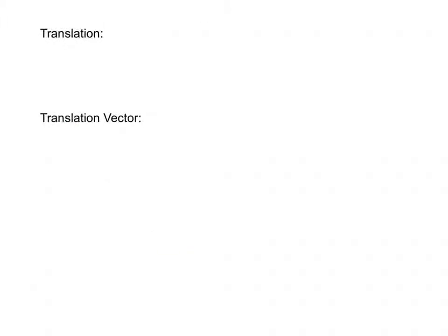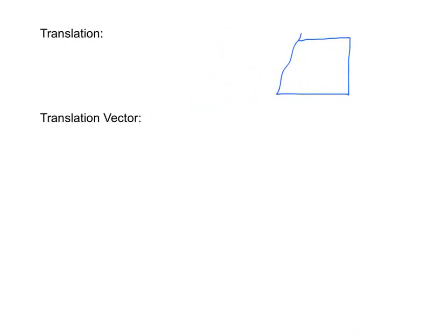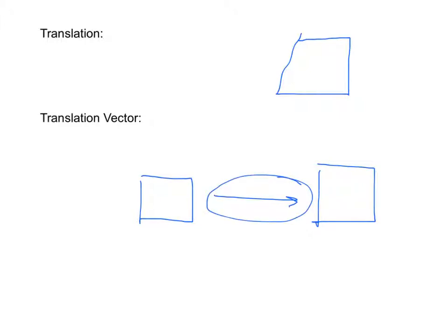A translation is the simplest type of isometry, and it's a movement in one direction. So if we have this figure and we want to translate it, it's simply a move like that. A translation vector is an arrow that shows the distance and direction of a translation — it shows how the figure moved and where it ends up.